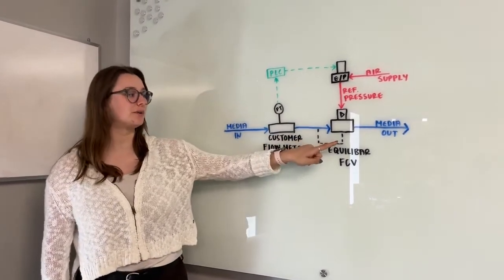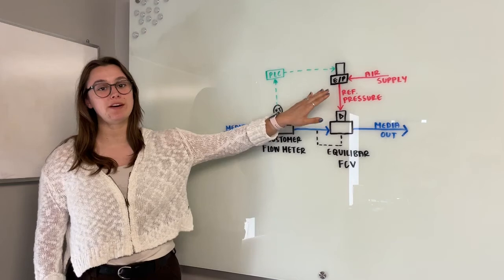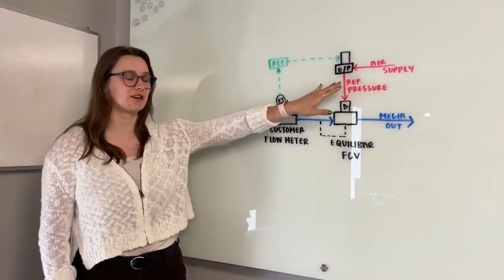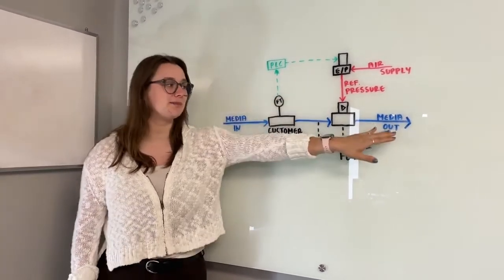The water then goes through our Equilibar flow control valve which is being piloted by a high precision QPV electronic pressure regulator. The water then empties to atmosphere.